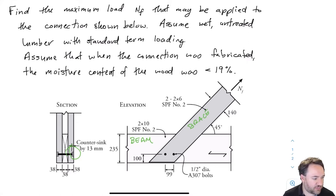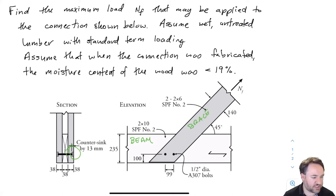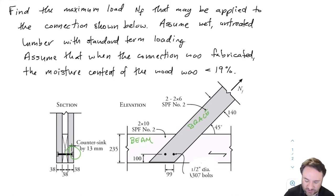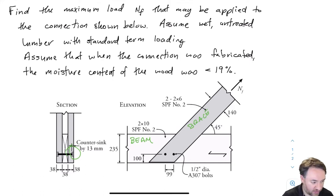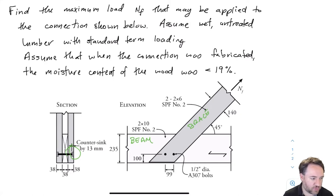Our beam is a 2×10 and our braces are 2×6s, one on either side of the 2×10. The angle given is 45 degrees and we're also given the size of the bolts: half-inch diameter A307 bolts. The other geometry of the connection is given in terms of where those bolts are located with respect to the brace and the beam.